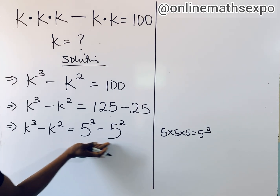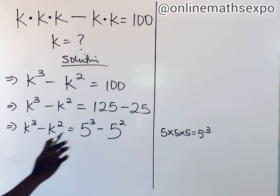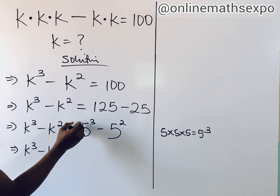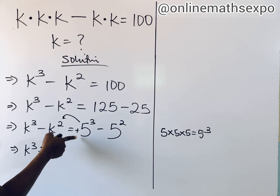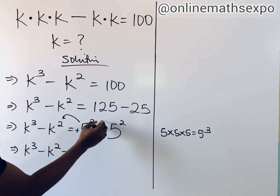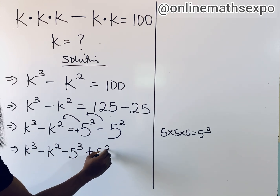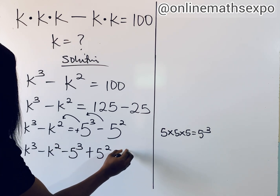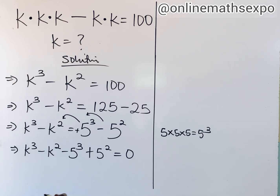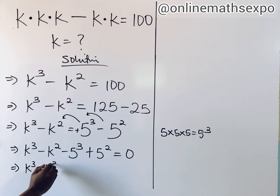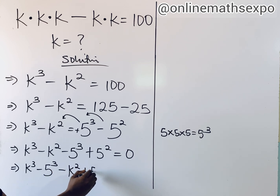We're going to move all values to the left side of the equation. k³ - k² is positive, so taking it to the other side makes it negative. This term is negative, so moving it to the left means adding it. We're left with zero: k³ - 5³ - k² + 5² = 0.